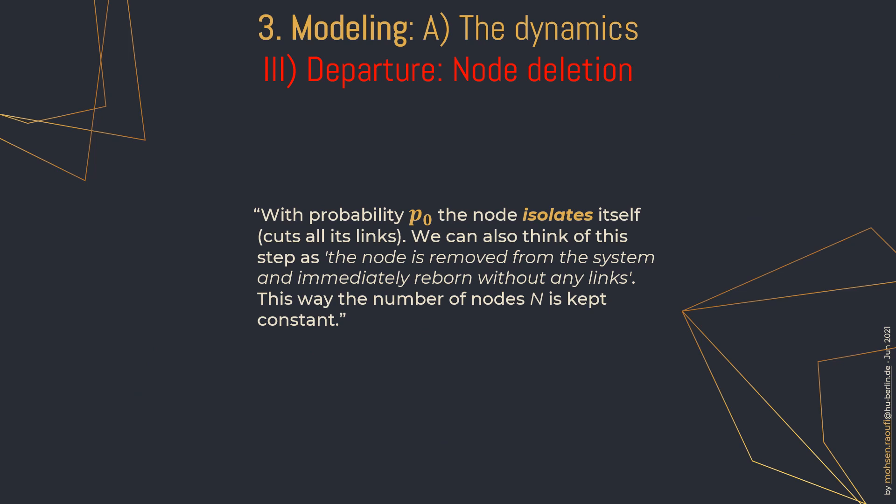The only mechanism that reduces connectivity is departure, or isolation, which is modeled by deleting a node — removing the node and all its belonging edges and replacing it with a new node with degree zero. By doing that, the number of nodes is kept constant.